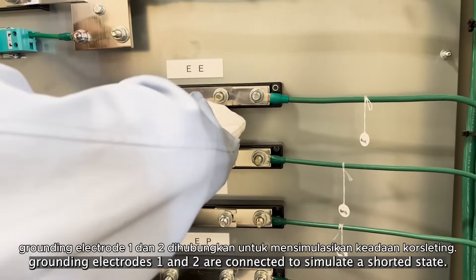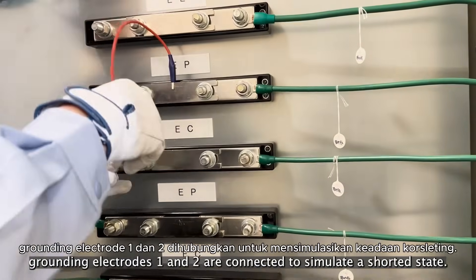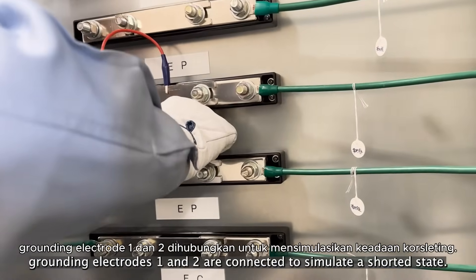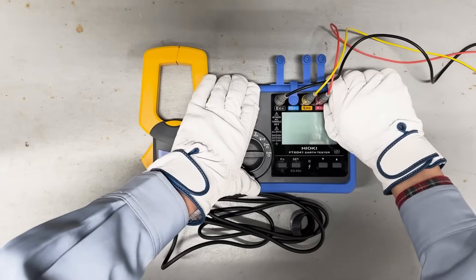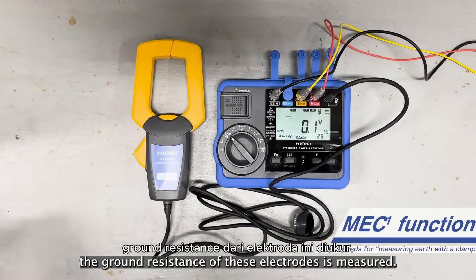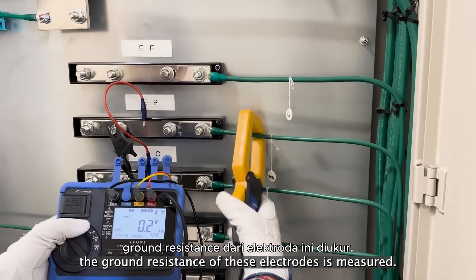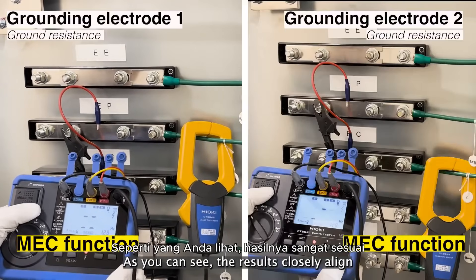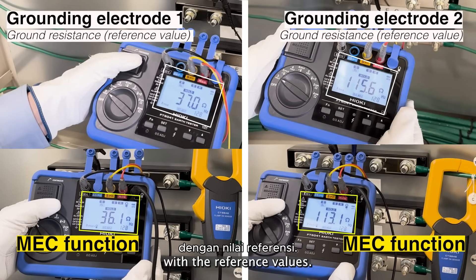Next, grounding electrodes 1 and 2 are connected to simulate a shorted state. Using the MEC function, the ground resistance of these electrodes is measured. As you can see, the results closely align with the reference values.